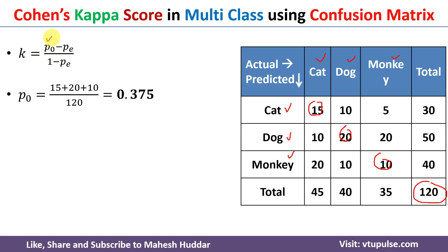The question is how to calculate p0 for the multiclass case. p0 equals the correct predictions divided by the total. Similar to using true positive and true negative in the binary case, here it is (15 + 20 + 10) / 120, which equals 0.375.